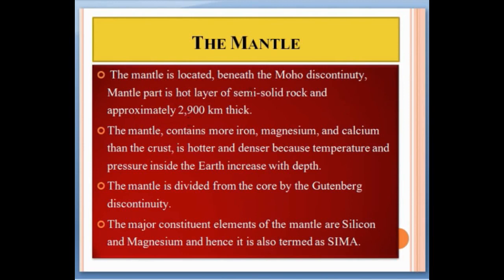The mantle is located beneath the Moho discontinuity. It is a hot layer of semi-solid rock approximately 2900 kilometers thick. The mantle contains more iron, magnesium, and calcium than the crust. It is hotter and denser because temperature and pressure increase with depth inside the Earth. The mantle is divided from the core by the Gutenberg discontinuity.